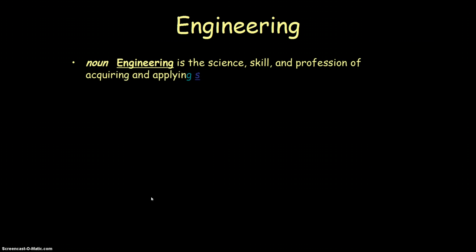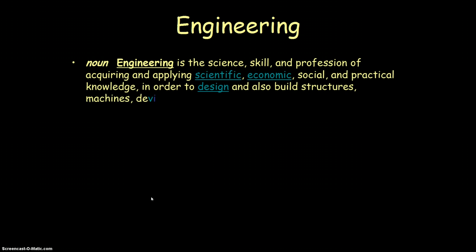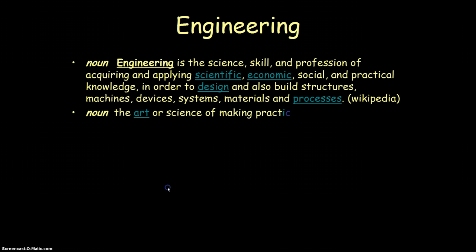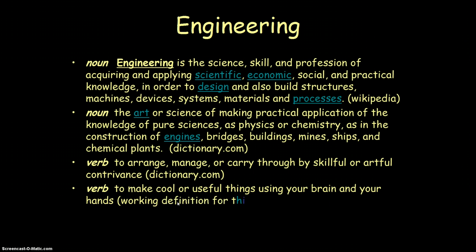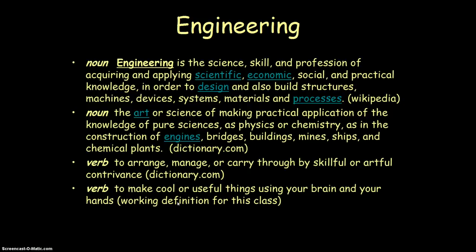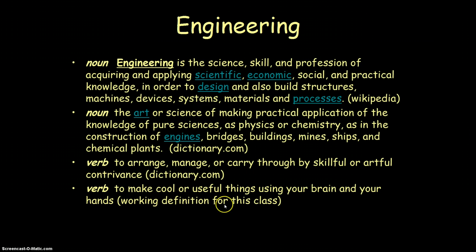Today's lesson is going to be talking about engineering and some of the differences between engineering and science. What you'll see popping up on the screen now is a definition for the word engineering — this one is from Wikipedia, used as a noun. It's not really important to have the formal definition, but the last one here is used as a verb: to engineer means to make cool or useful things using your brain and your hands. That's the definition I want you to focus on for this class.